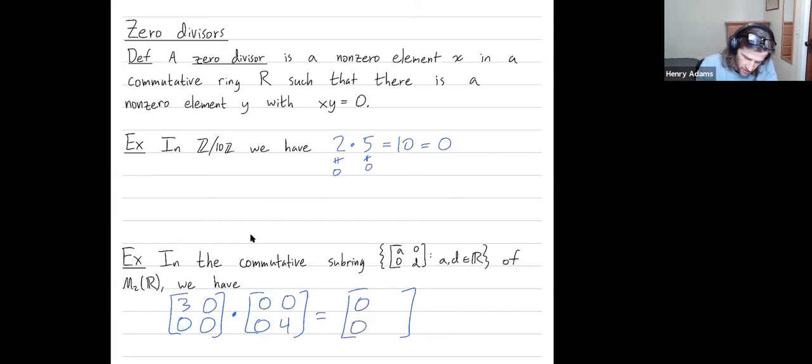Top right entry, I line this up. This is the interesting one. Neither row nor column is all zeros, but still I get 3 times zero plus zero times 4, which is zero.